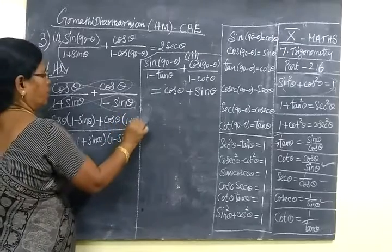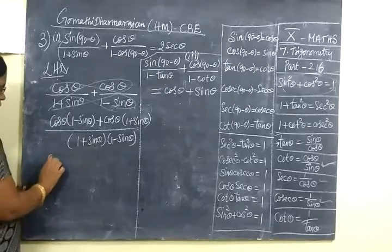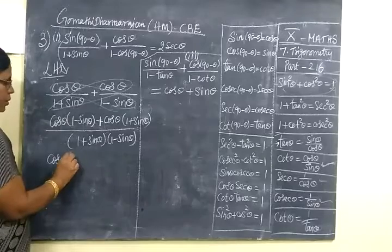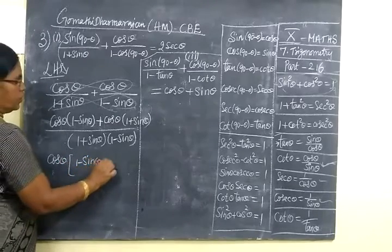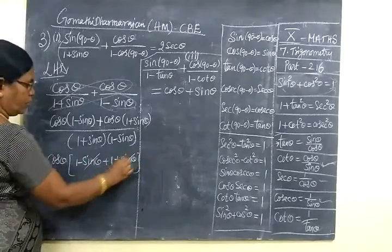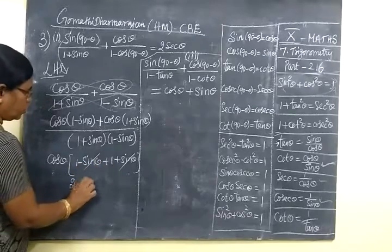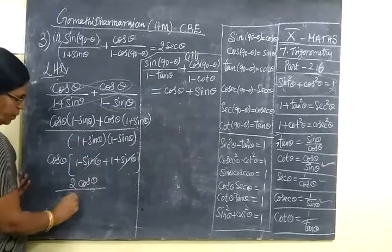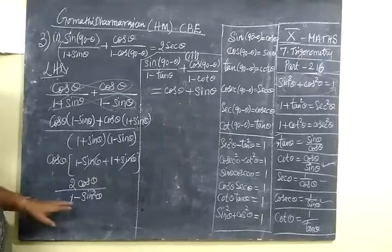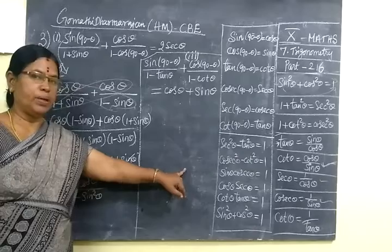Then 1 plus cos theta. So if you take cos theta common, you can write it as 1 minus sin theta, then 1 plus sin theta. So you can write it as 1 minus sin theta, so 1 plus 1 equals 2. So: 2 cos theta by — using a plus b into a minus b — equals 1 minus sin squared theta.